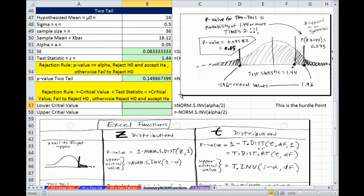And so for the critical value, we're going to use our NORM.S.INV. But we're given an alpha of 0.05.